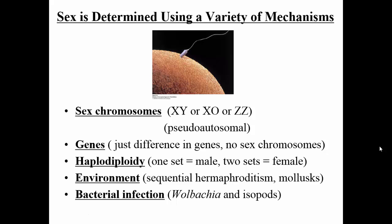Sex is determined using a variety of mechanisms. Many organisms, like humans, have X and Y chromosomes — female is XX, male is XY. Other organisms have the X chromosome where absence of a chromosome makes it female. Some have Z chromosomes. In some organisms, sex is determined by genes — presence or absence of genes. Others are determined by ploidy, so one set of chromosomes is male, two sets is female. Other organisms are determined by the environment, and even bacterial infections can determine the sex of the organism.